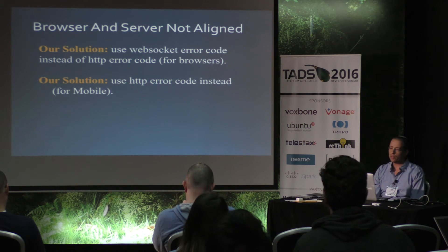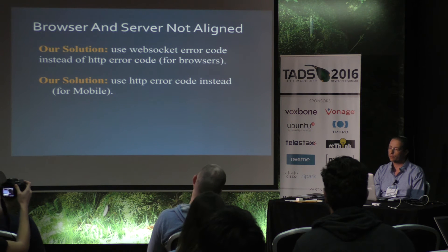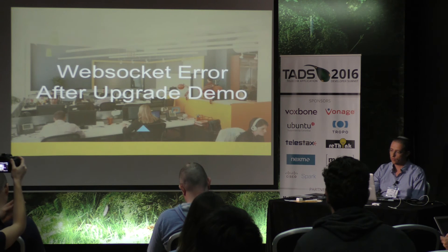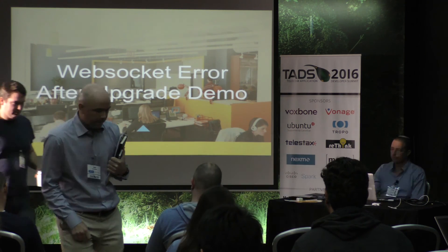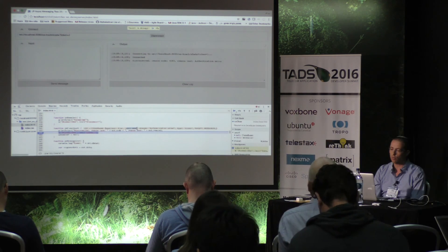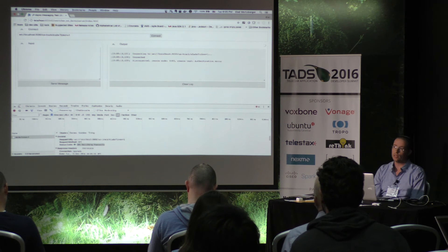Our solution at LivePerson was divided. For browsers, we finish the HTTP upgrade and only then use WebSocket error codes. For mobile, for example, we can fail the HTTP upgrade with the HTTP error code. After the upgrade is done, if we use later error messages, they are all exposed inside the JavaScript. In the demo, you can see the specific error has reached the JavaScript client, and at the HTTP level it's still 101 — the upgrade — because the upgrade finished successfully, and still the WebSocket receives the error.